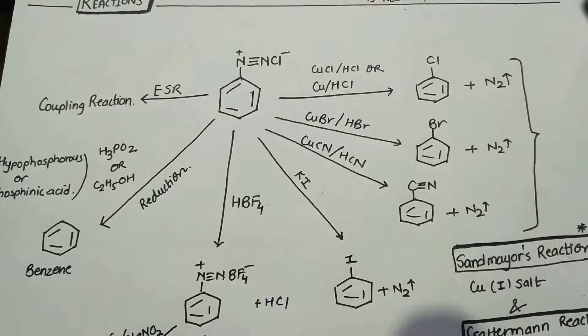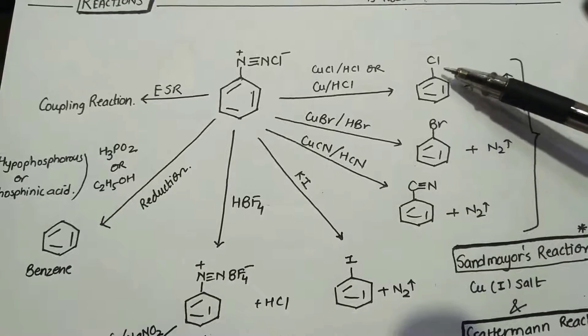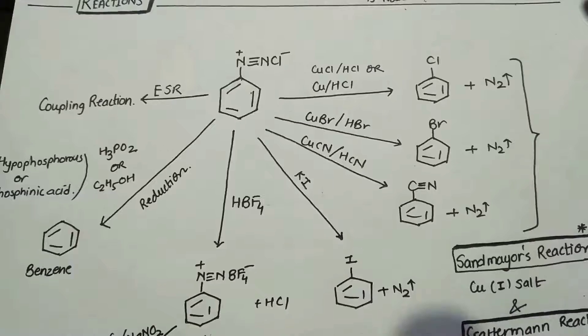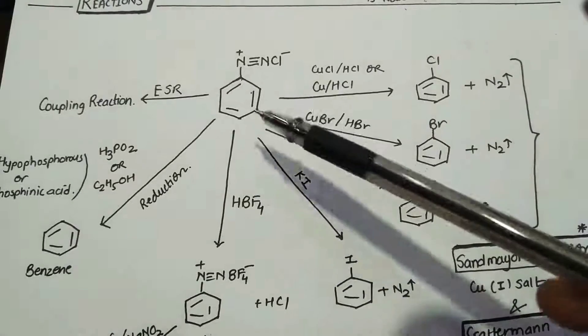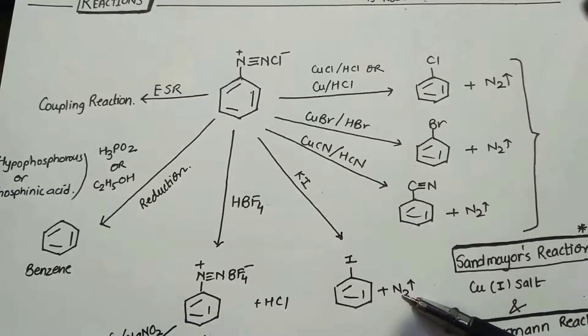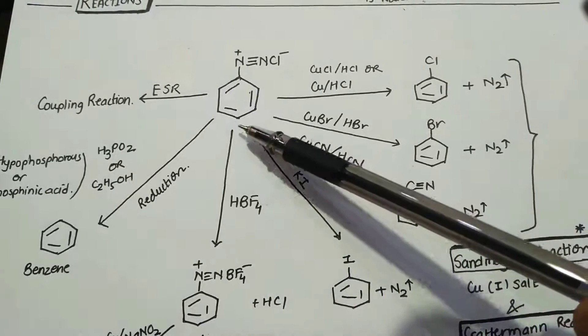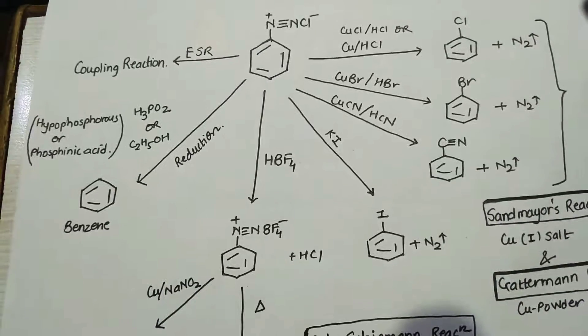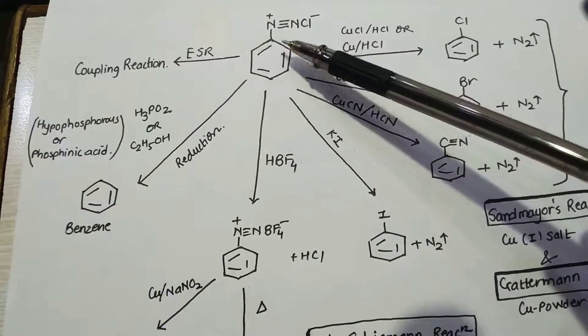Chlorobenzene, bromobenzene, and cyanobenzene will be formed from Sand Meier. Iodobenzene: to make iodobenzene, diazonium chlorides are treated with potassium iodide. That will give you iodobenzene and N2 is liberated. Now to prepare fluorobenzene, we do another reaction which is called Balz-Schiemann reaction. Very important, students.